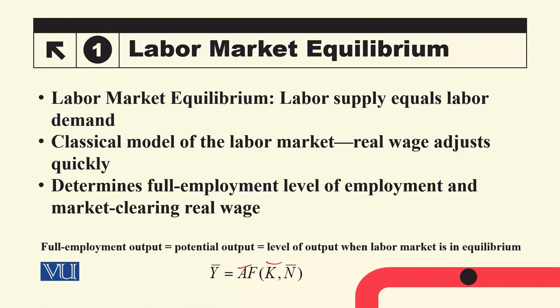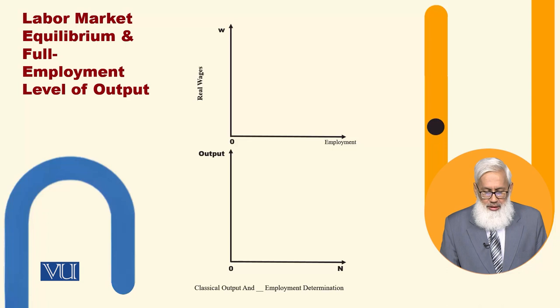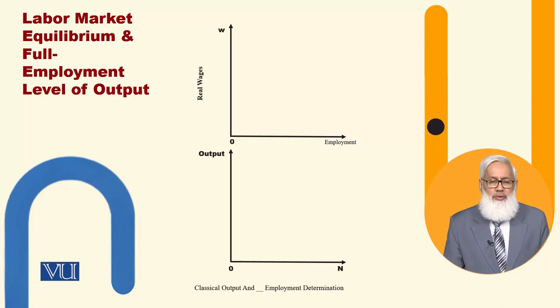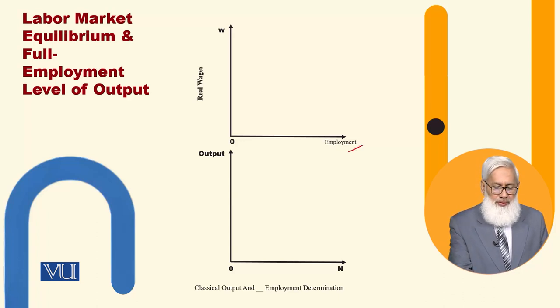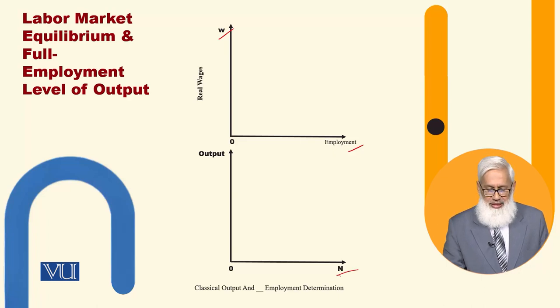We will also study this graphically. Y-bar is where A is constant, K is constant, and labor demand and supply are equal — this is the full employment level of output. Graphically, we have two graphs. In the upper graph we discuss the labor market, where the X-axis is employment and the vertical axis is the real wage. In the lower graph, the horizontal axis is labor and the vertical axis is output.